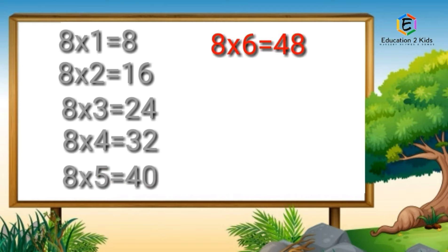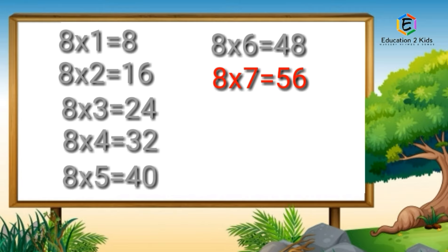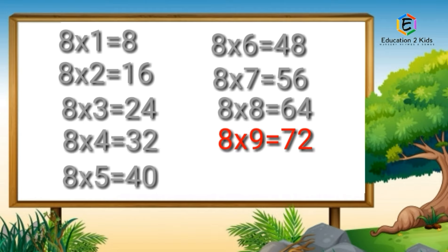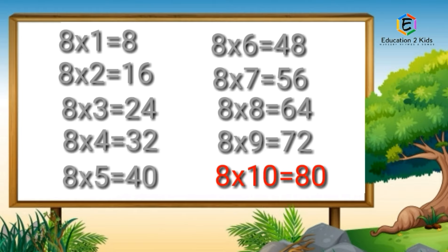8 sixes are 48, 8 sevens are 56, 8 eights are 64, 8 nines are 72, 8 tens are 80.